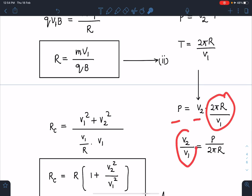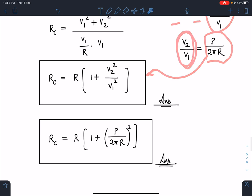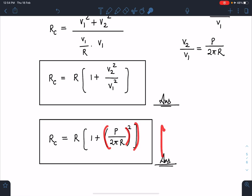If I substitute in this, I'm going to get this standard result: R_c = R[1 + (P/2πR)²]. This is going to be the radius of curvature of helix. Guys, you should remember both forms in order to have some edge in the exam.